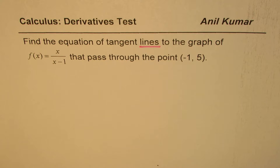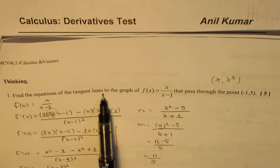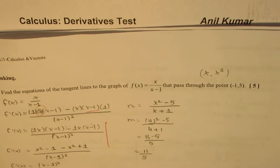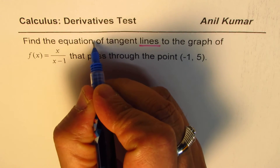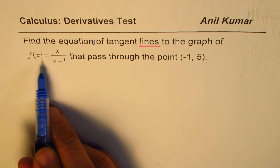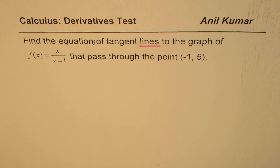I'm Anil Kumar, sharing with you a question from a previous test paper. This is on derivatives of functions. The question says: find the equations of tangent lines to the graph of f(x) = 2x over (x minus 1) that pass through the point (-1, 5).